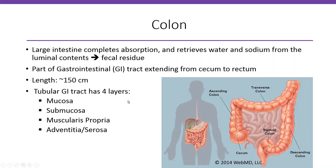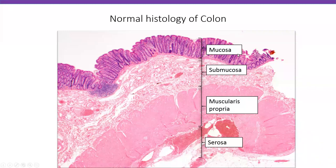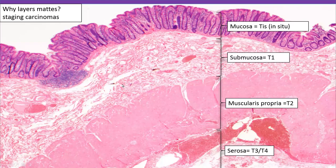The tubular GI tract has four layers: mucosa, submucosa, muscularis propria, and adventitia or serosa — like any other tubular GI tract. We need to know these layers in order to stage carcinomas and to understand disease processes. When a tumor is located in the mucosa only, it is carcinoma in situ; if it goes to the submucosa it's T1, then T2 and T3, with different management at each stage. Some disease processes involve the full thickness of the GI tract, while others involve only focal areas of the mucosa.